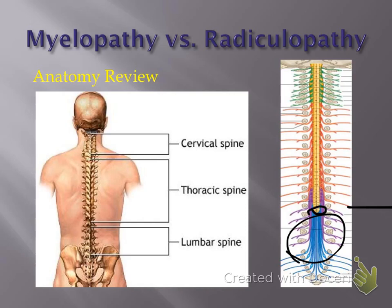We're going to talk mostly about cervical myelopathy versus cervical radiculopathy. You can get thoracic myelopathy and radiculopathy, but it is less common because the rib cage provides so much structural support to the thoracic spine that it doesn't see a whole lot of movement or degeneration. Most of the myelopathy or radiculopathy stemming from the thoracic spine is due to major trauma.